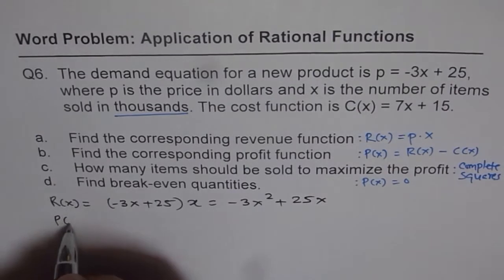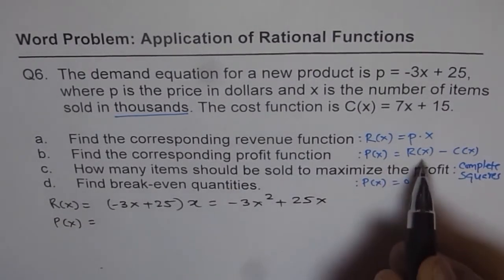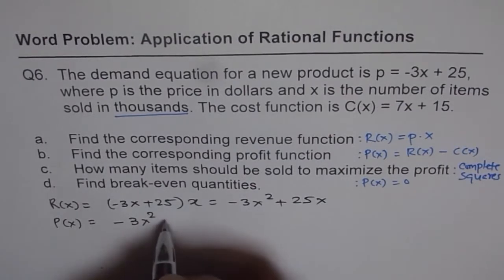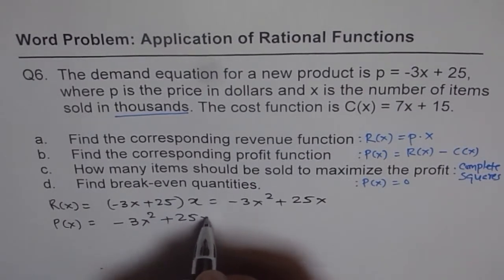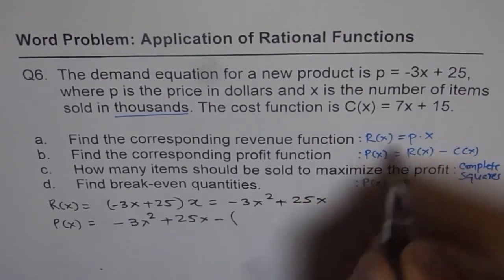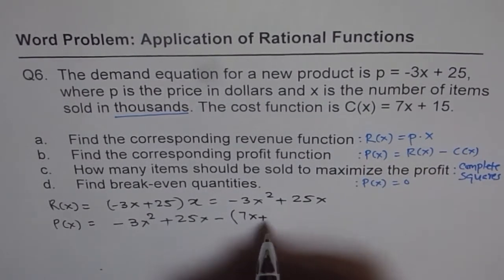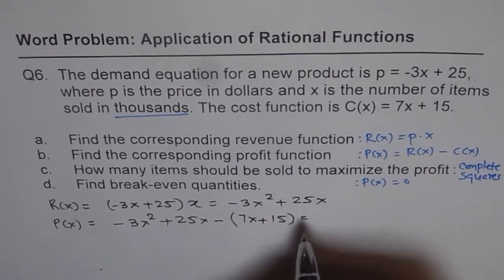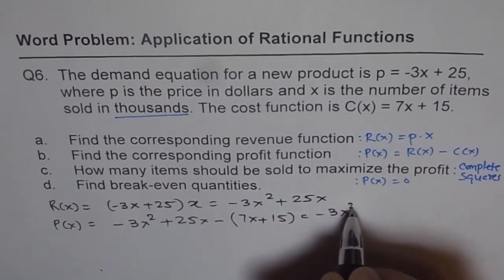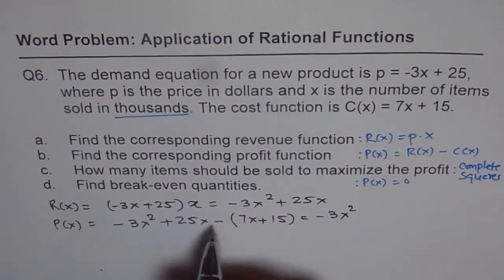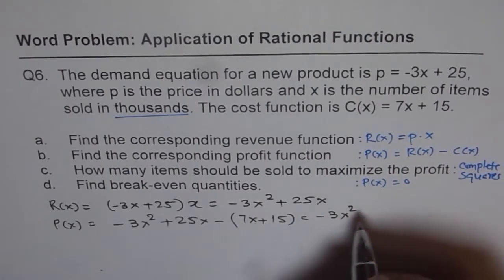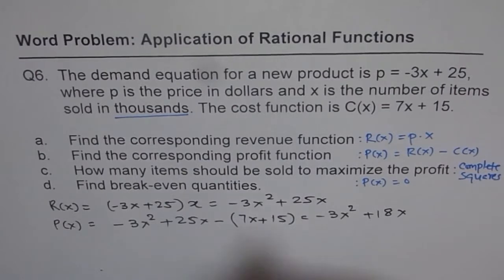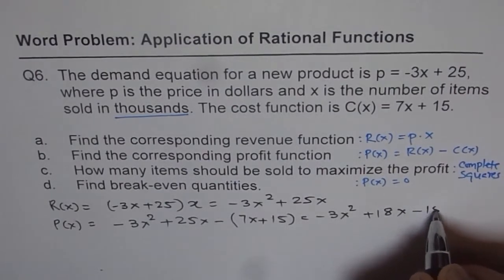Profit function will be revenue minus cost. That means minus 3x squared plus 25x minus, good to write it in brackets, 7x plus 15. And then when we simplify it, we get minus 3x squared, 25x minus 7x gives us plus 18x, and minus times plus is minus 15.